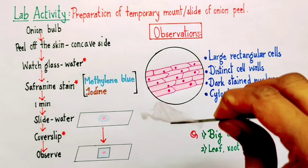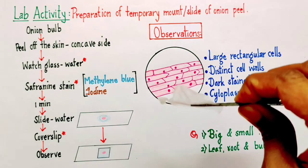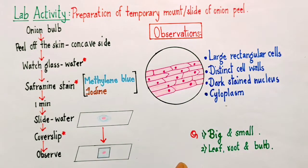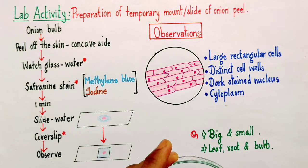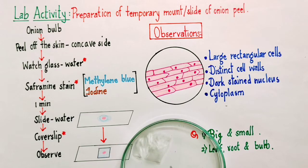And immediately we need to transfer this peel into a watch glass containing water. Now the question arises, why do we need to put this onion peel in water? As we all know that most living cells require water to maintain their good health or to survive.